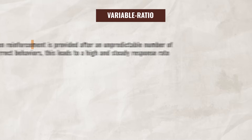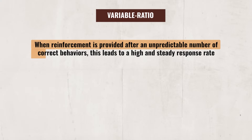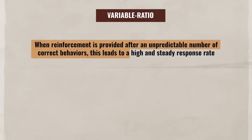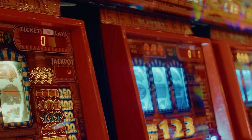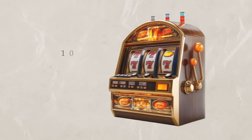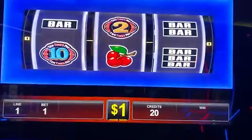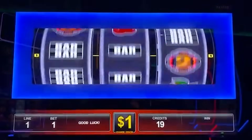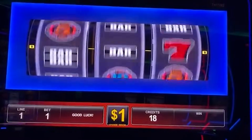Lastly, there is variable ratio, which is when reinforcement is provided after an unpredictable number of correct behaviors. This leads to a high and steady response rate. This type of reinforcement is the most resistant to extinction, since at any moment the individual could be rewarded. A slot machine at a casino uses this reward schedule — sometimes the machine will pay out after the 10th pull, sometimes the 2nd pull, and sometimes the 50th pull. The individual doesn't know when the payout is coming and is motivated to keep playing, since that next pull could be the winner.